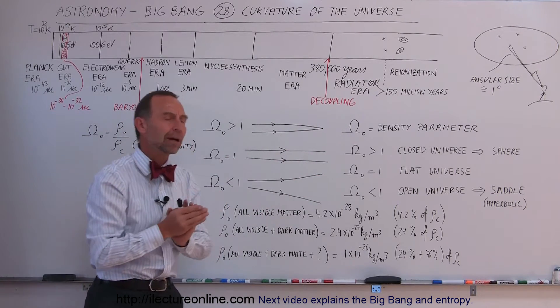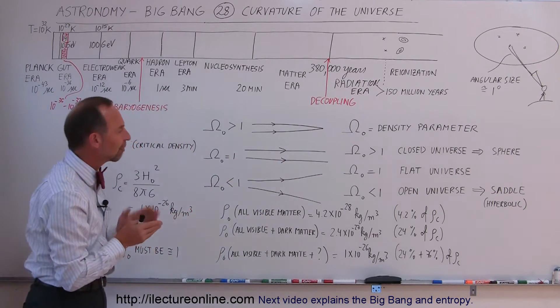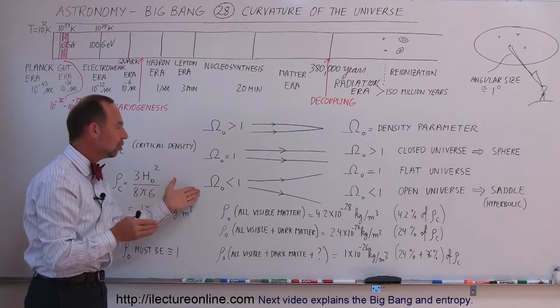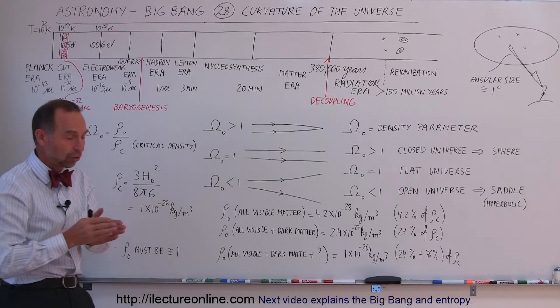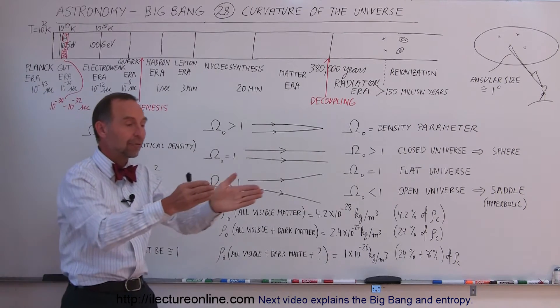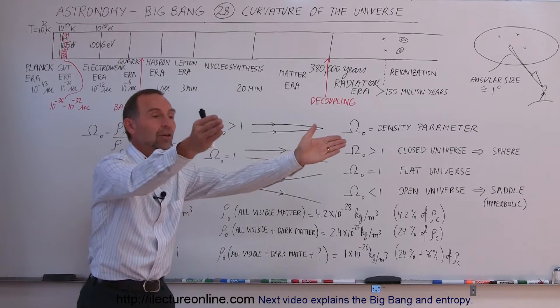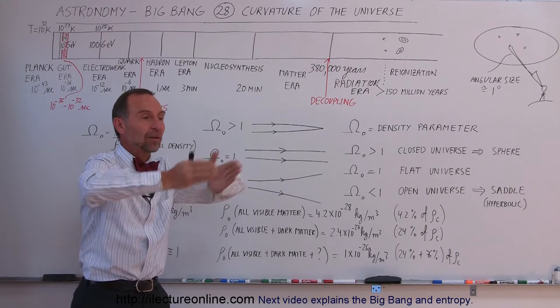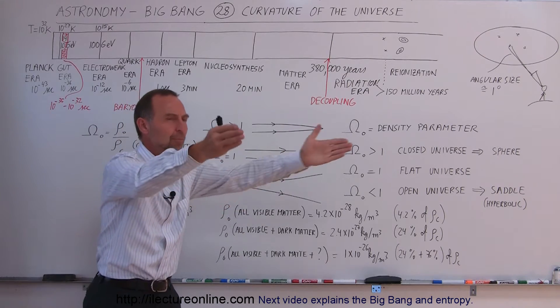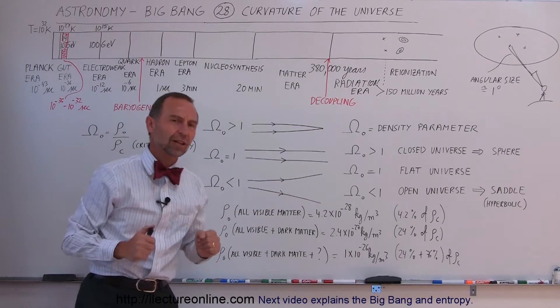That's what we mean by a flat universe. Two laser beams in an open universe would slowly begin to diverge from one another, never come back together, not stay parallel — just keep on moving away from each other.